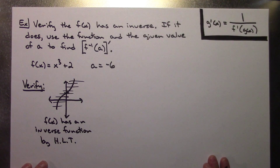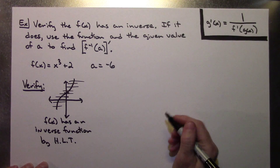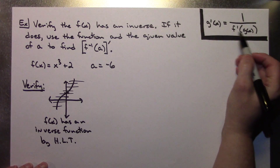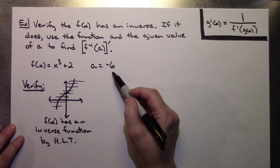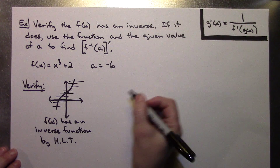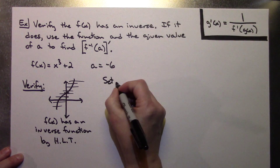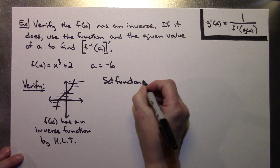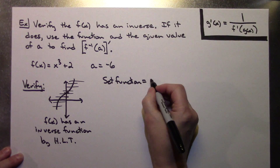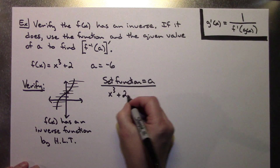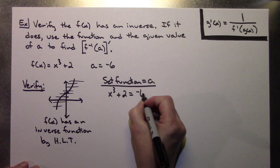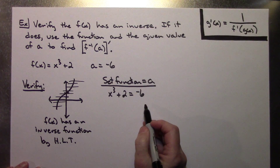Now I've done the verify part. Up in the corner I've rewritten the formula for reference. Basically we can do this in about four steps. Your first step is to set your function equal to the value they give you. So I'm going to take x cubed plus 2 and set it equal to negative 6. Now I'm going to solve this for x — subtract 2 from both sides, and x cubed equals negative 8.